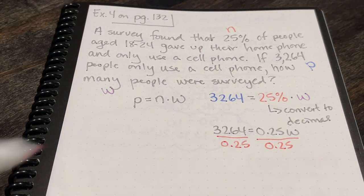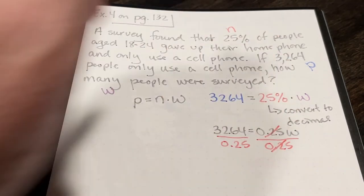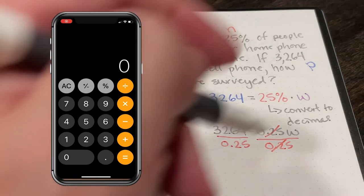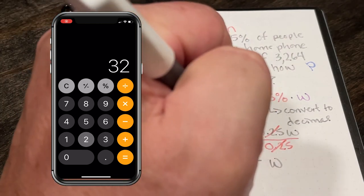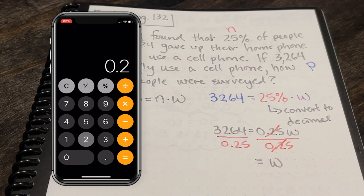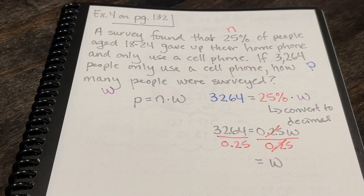What I need to do is divide both sides of the equation by the coefficient of w, which is 0.25. 0.25w divided by 0.25 is going to be w. And then 3,264 divided by 0.25 is going to be 13,056.